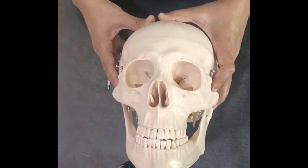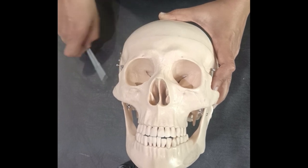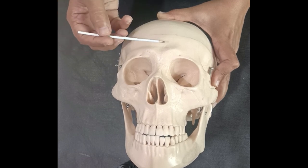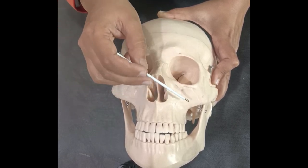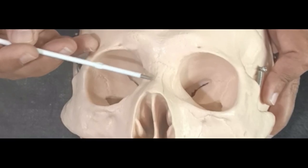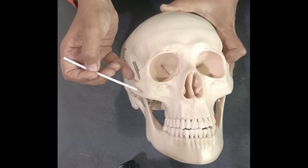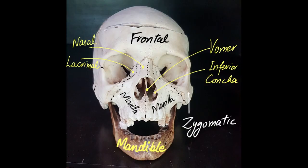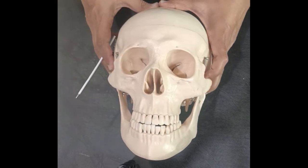Now let's talk about the Norma frontalis. Norma frontalis means when we see the skull from the front, all the things which can be seen from the front come under the heading of Norma frontalis. The bones which form Norma frontalis are the frontal bone, which forms the forehead; the maxilla bone (right and left); nasal bone, which is a paired bone; the zygomatic bone, also called the cheek bone; and the mandible, which forms the lower jaw. All these bones join together to form the Norma frontalis, or the viscerocranium.